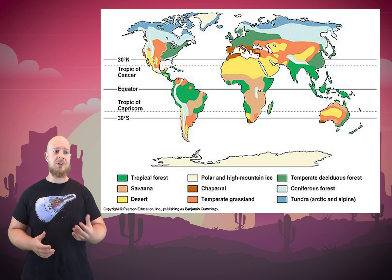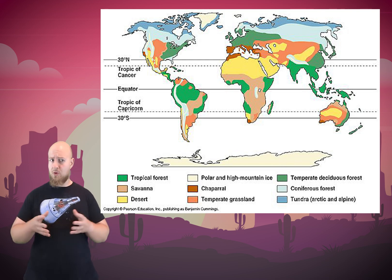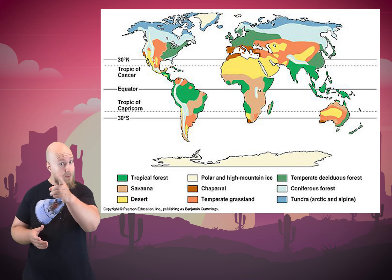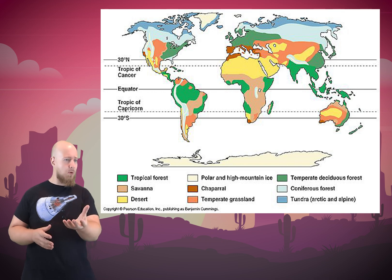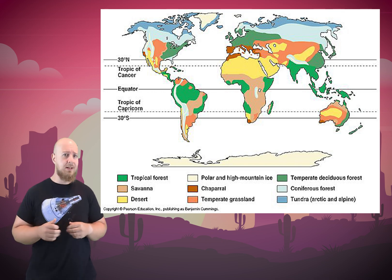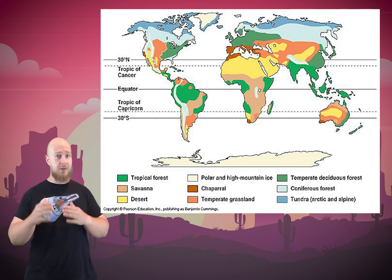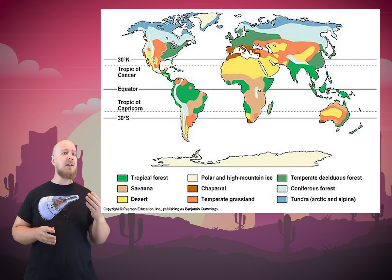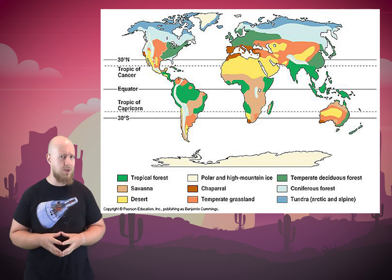This map shows the general distribution of biomes across the globe. The astute observer will notice a pattern: tropical rainforests tend to be clustered near the equator, deserts around the 30 degrees north and 30 degrees south line, and tundras in the far polar regions.